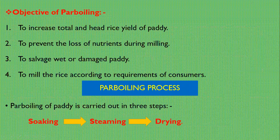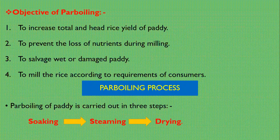There are various objectives of the parboiling process. The first is to increase total and head rice recovery of paddy. The second is to prevent the loss of nutrients during milling. The third is to salvage wet or damaged paddy, and the fourth is to mill the rice according to the requirements of consumers.